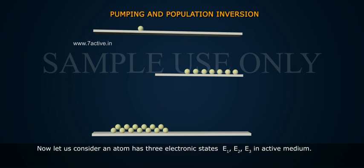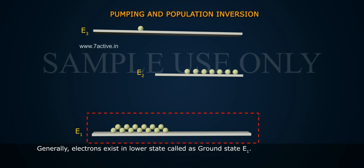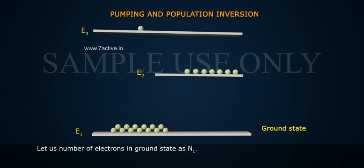Now, let us consider an atom has three electronic states, E1, E2, E3, in active medium. Generally, electrons exist in lower state called as ground state, E1. Let us number of electrons in ground state as N1.